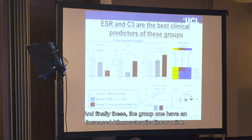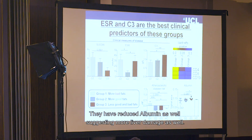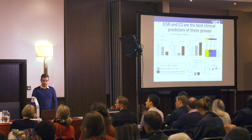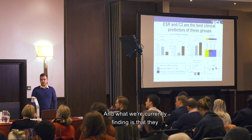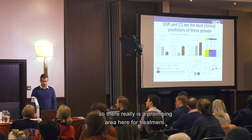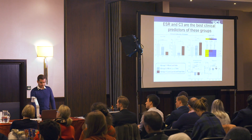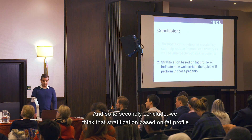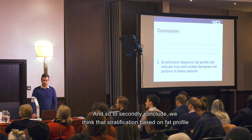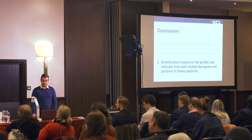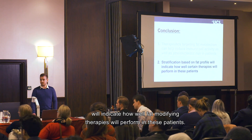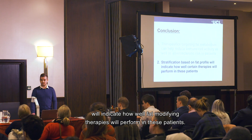Group one also has increased atherosclerotic disease risk and reduced albumin suggesting more liver damage, and we are currently finding they also have a different immune cell profile — a promising area for treatment. Our second conclusion is that stratification based on fat profile will indicate how well fat-modifying therapies will perform in these patients.